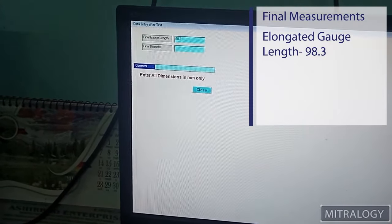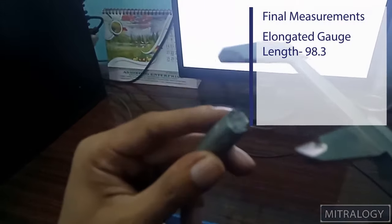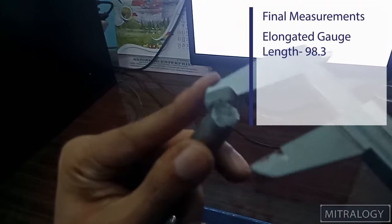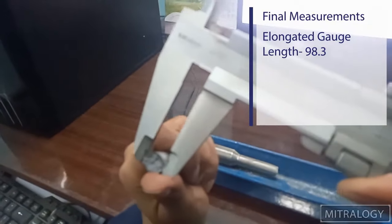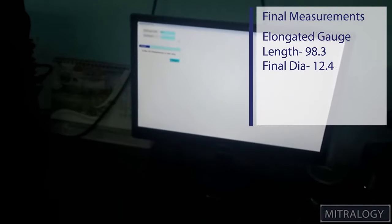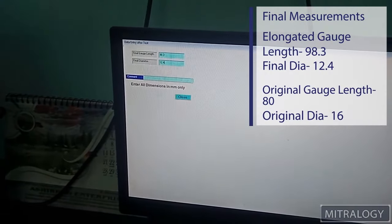Now the final diameter. As I can see the specimen has cup and cone shape in the breaking part. This is 12.4. So diameter reduced to 12.4 from 16.